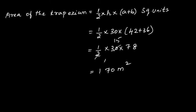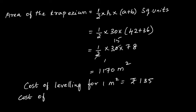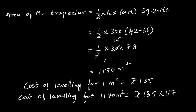You got the area of the trapezium to be 1170 meter square, and they have given cost of leveling for 1 meter square equals Rs 135. So the cost of leveling for 1170 meter square equals Rs 135 multiplied by 1170. When you multiply you will get Rs 157,950.